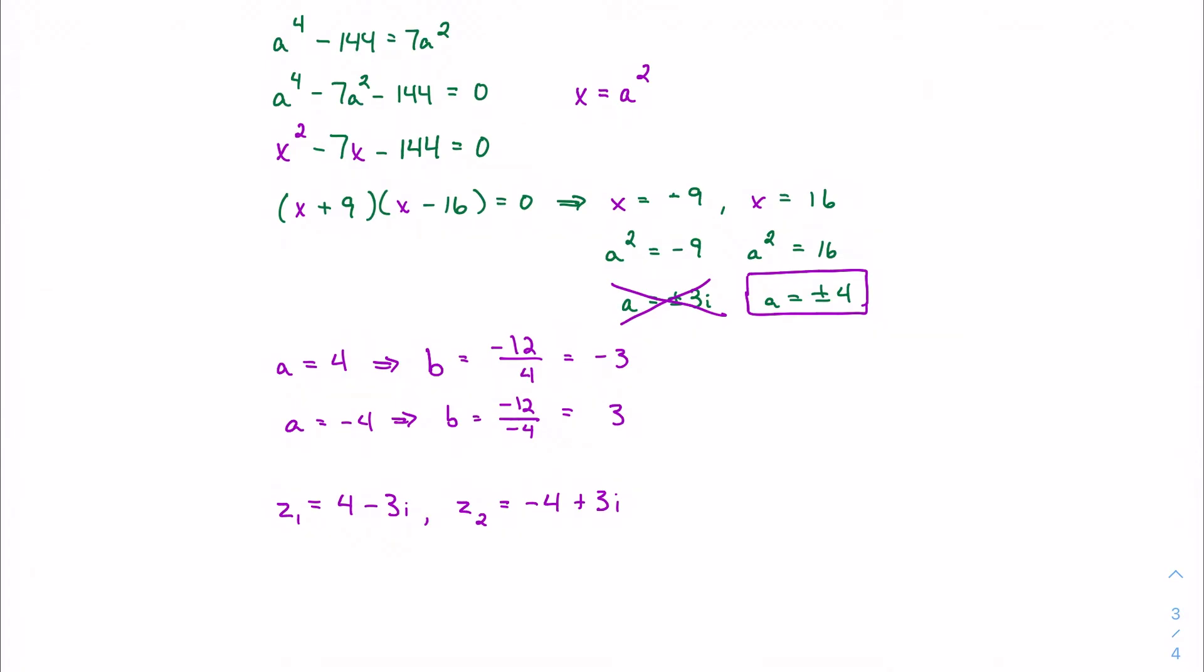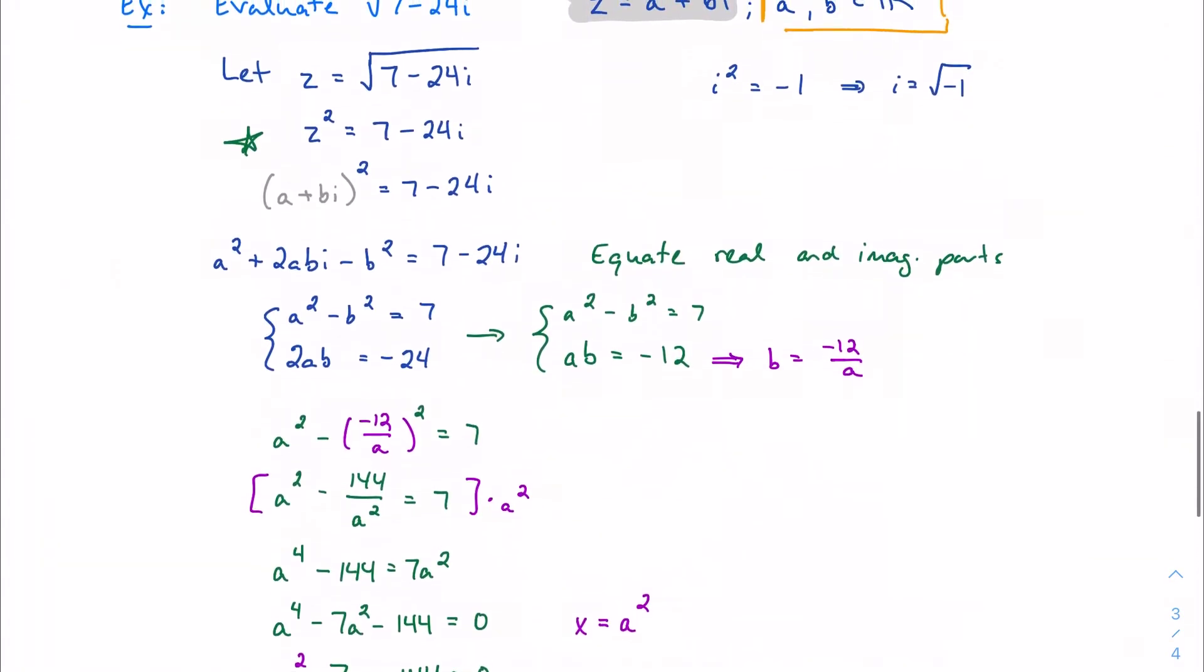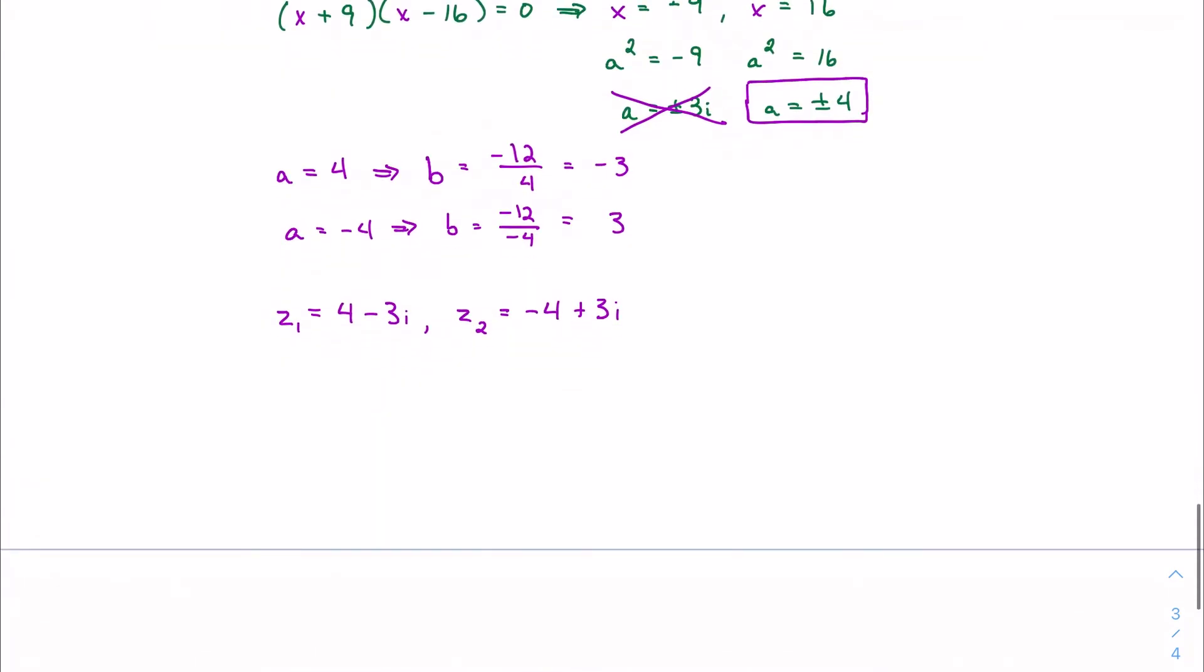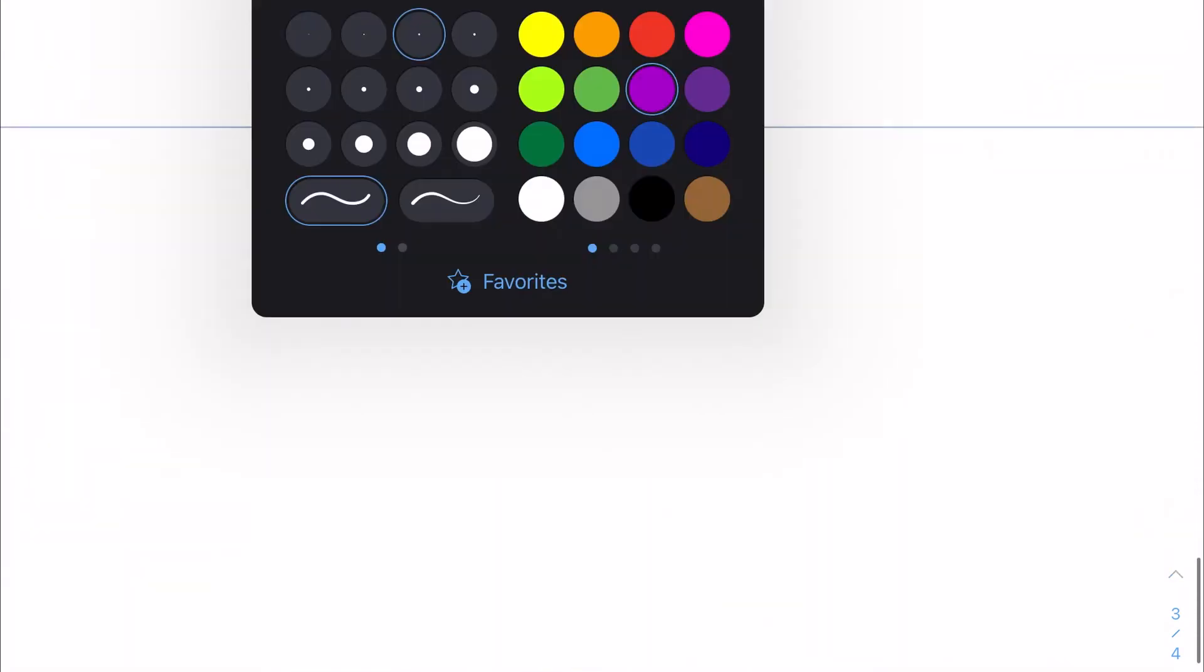I should be able to square these and prove that it works out. You don't need to do a check in your work, but in case you are curious and want to check it, I should be able to show that this number squared is going to give me 7 minus 24i. So 4 minus 3i squared should give me 7 minus 24i. Let's find out.